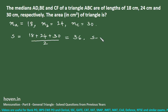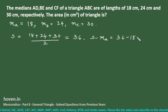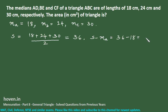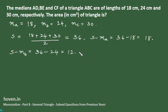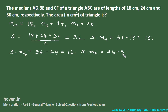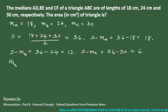We also compute S − MB = 36 − 24 = 12, and S − MC = 36 − 30 = 6. Now we apply Heron's median formula: Area = (4/3) × √(S × (S−MA) × (S−MB) × (S−MC)).